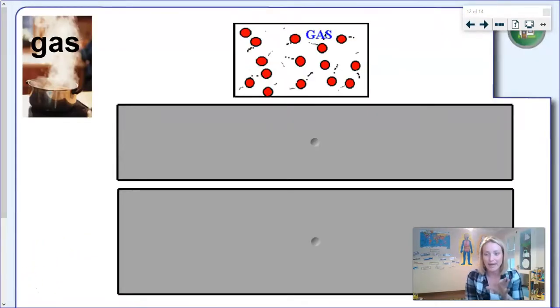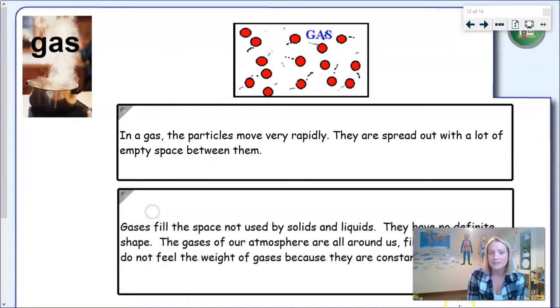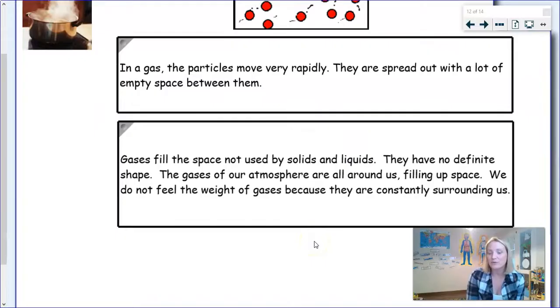Now finally, if we compare solids and liquids to gases, and you have a little look at the diagram above, you'll see now the particles are very spread out. They have a lot of empty space in between them and they move very rapidly. This means that gases fill the space that is left by solids and liquids in our environments. They have no definite shape and they fill the atmosphere around us. We don't feel the weight of a gas, but they still do have mass, but we don't feel them because they're constantly surrounding us.